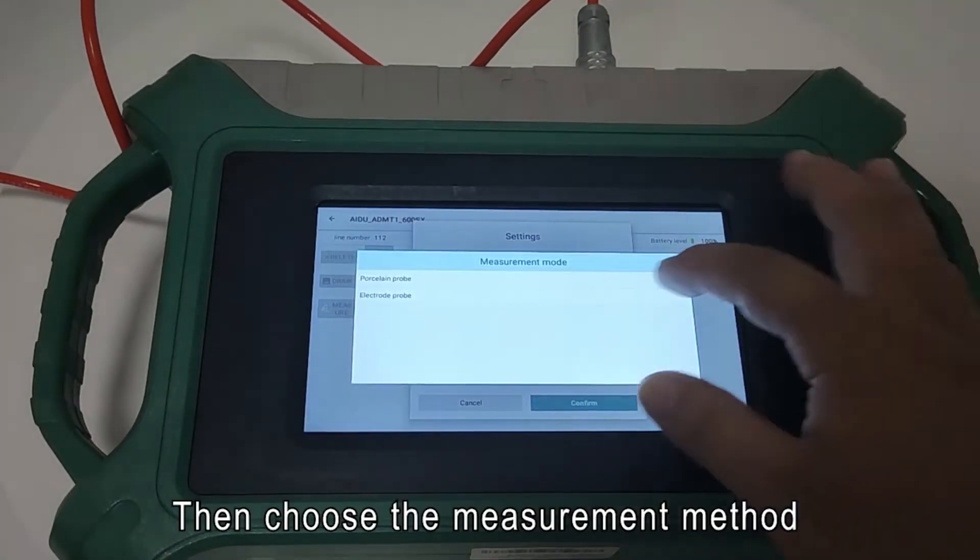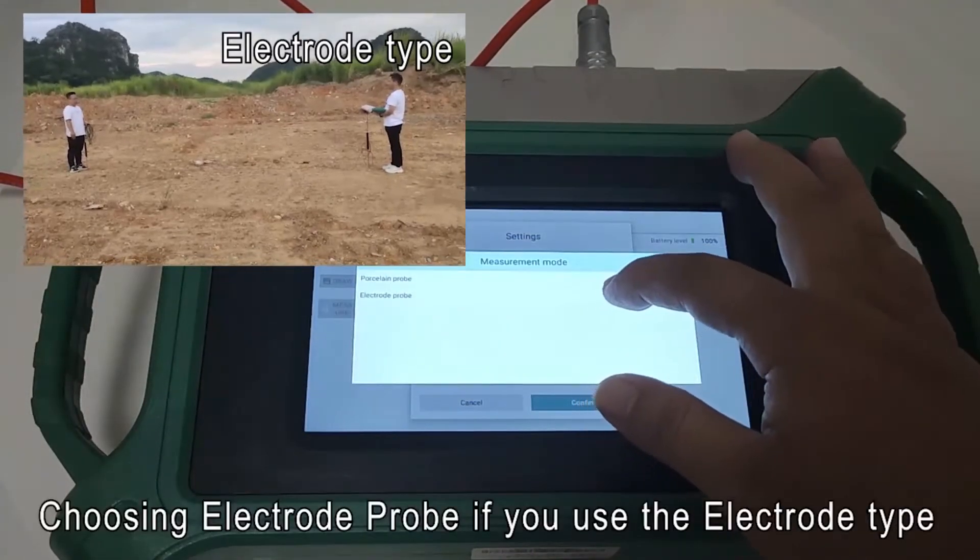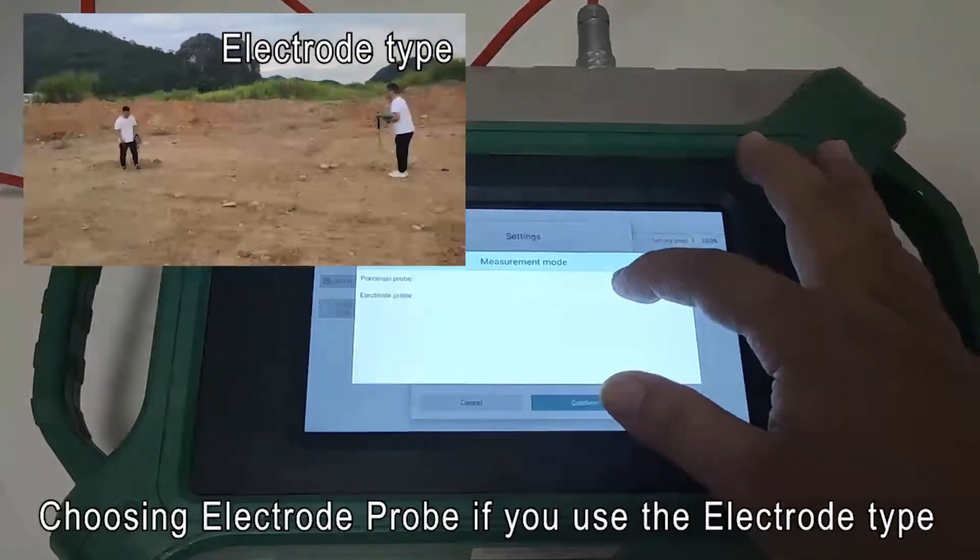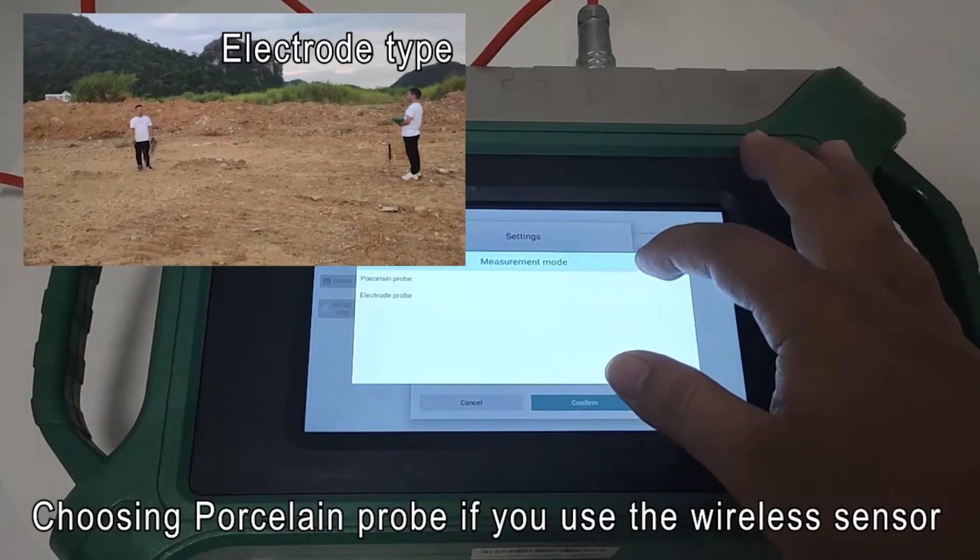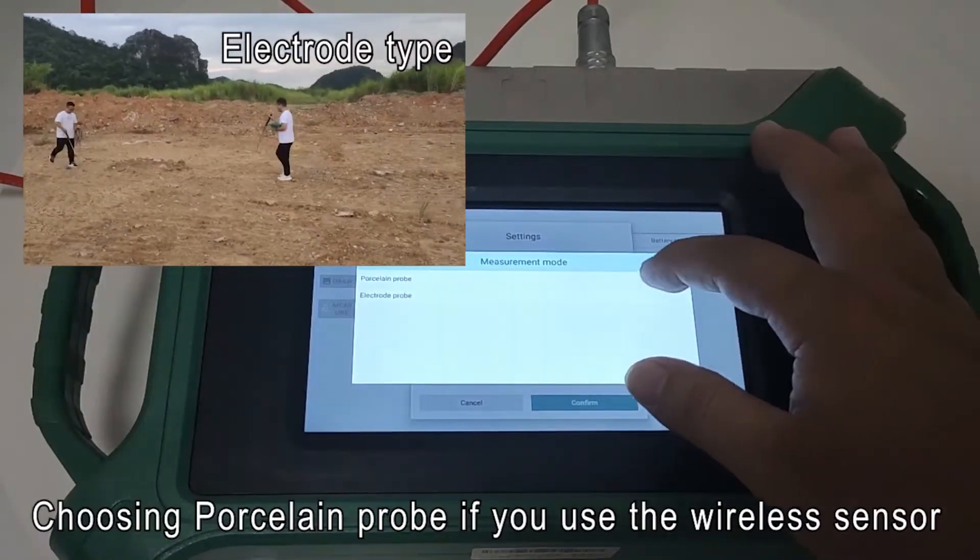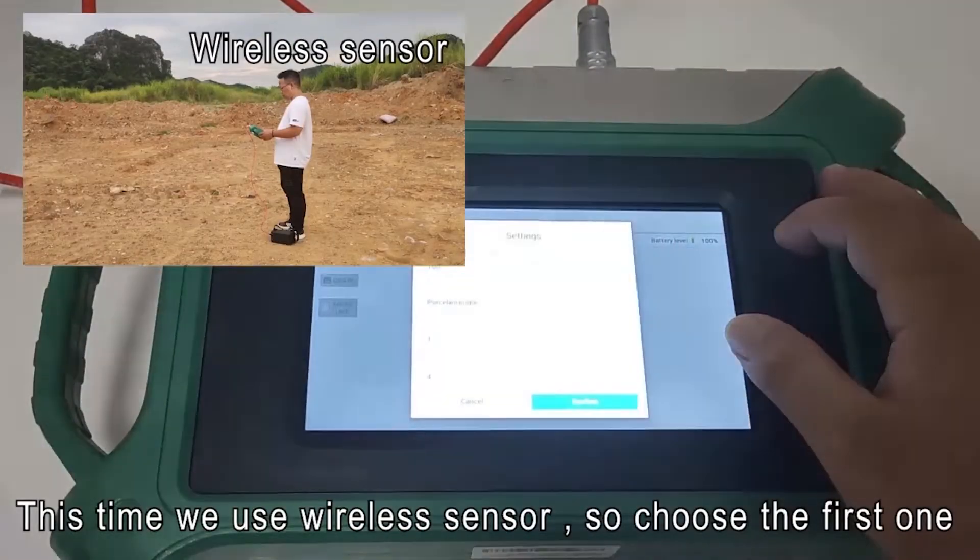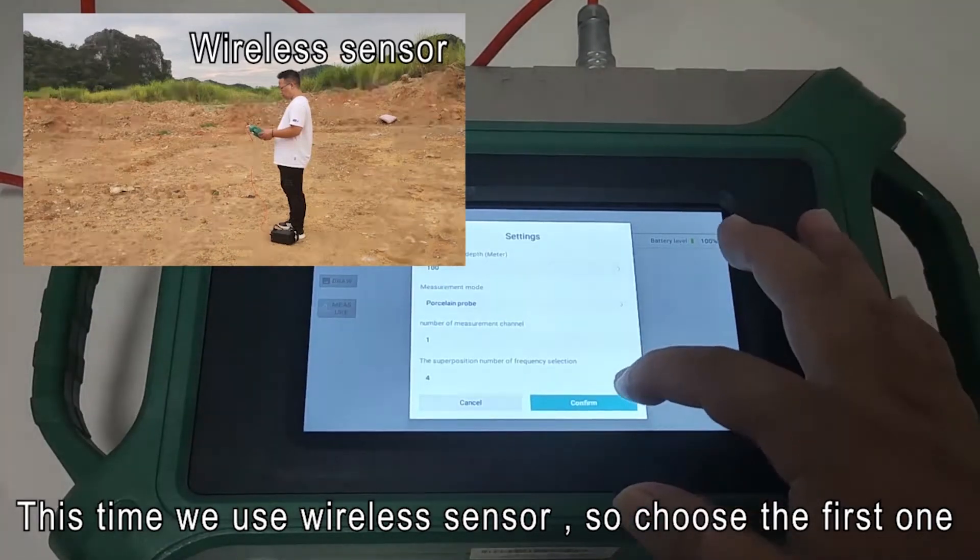Then choose the measurement method. Choose an electrode prop if you use the electrode type. Choose a prospect prop if you use the wireless stencil. This time we use wireless stencil, so choose the first one.